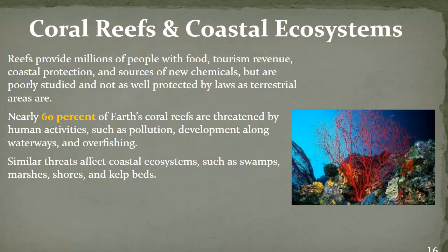We also look at coral reefs and coastal ecosystems. Reefs provide us with food and tourism revenue, but they're poorly studied and not as well protected as terrestrial areas. About 60% of Earth's coral reefs are threatened by human activities such as pollution and development along waterways. These things are also happening in swamps, marshes, and kelp beds. There was a controversy about building wind turbines off the Atlantic coast, with most people arguing aesthetics rather than the ecological impact on species living in the ocean.